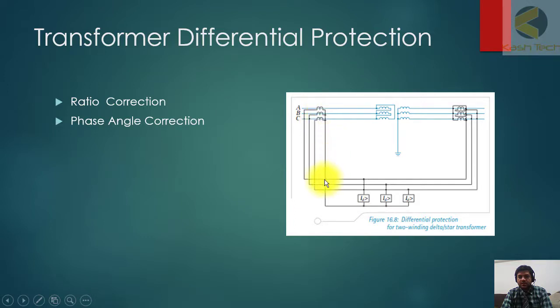For example, if one ampere current is flowing to HV side and 10 ampere current is flowing on the secondary side, the differential should be zero. So you have to do this compensation, which is called ratio correction. The second thing is phase correction.